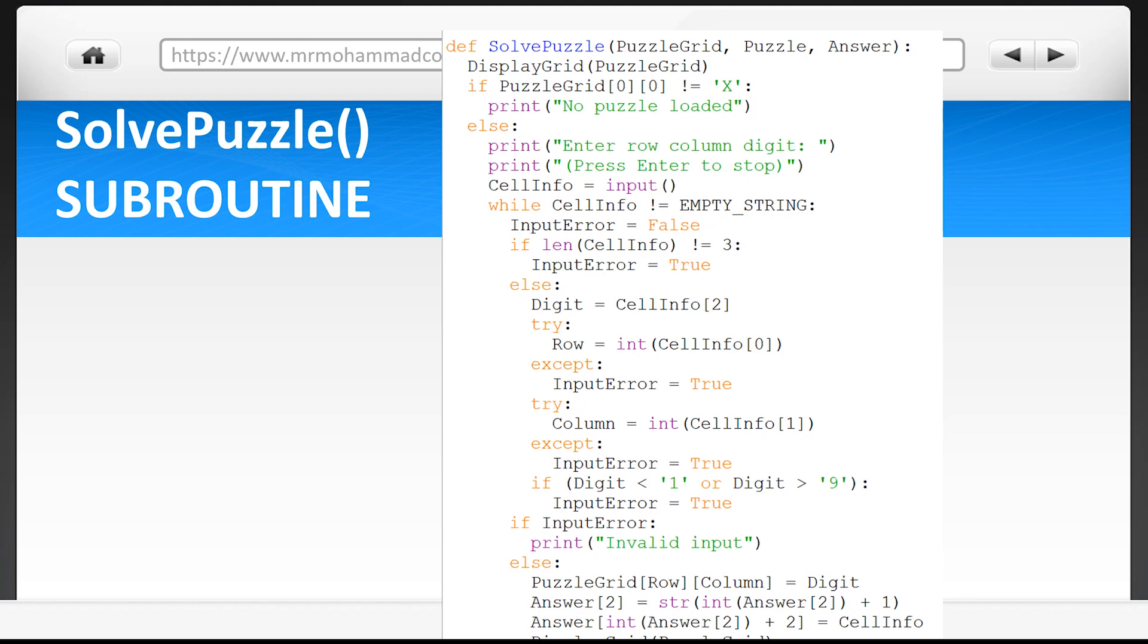Remember how I said that user's input must be three numbers? Well now we've got an if statement checking for exactly this. If the length of cell info is not three, input error is now true. Later on down the code, an output message for invalid input will be displayed and the user will be asked to re-enter their numbers.